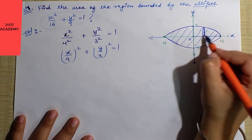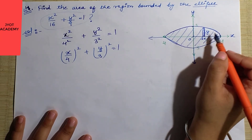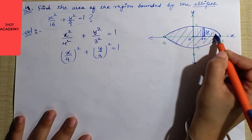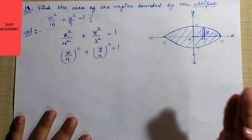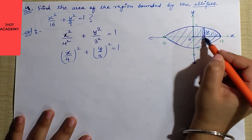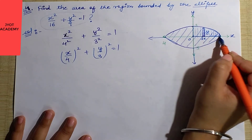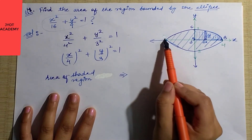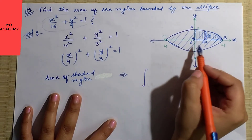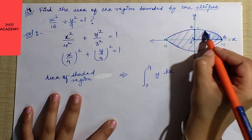The height of each small strip is y and the change is dx. To find the total area from here to here, we need to apply limits from 0 to 4. So the area integral for the first quadrant is the integral from 0 to 4 of y dx, where y touches this ellipse.